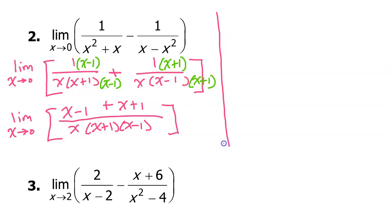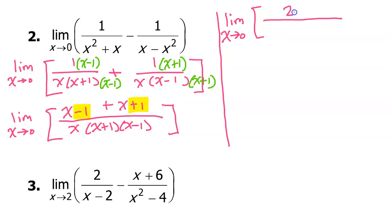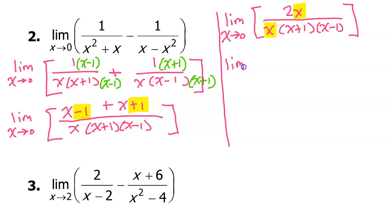Scanning for anything that cancels: we have a minus one and a plus one in the numerator, so those cancel each other out. Then x plus x is just 2x. The denominator is still x(x+1)(x-1). We have a common factor of x in the numerator and denominator, so those cancel, leaving the limit as x approaches zero of 2 over (x+1)(x-1).